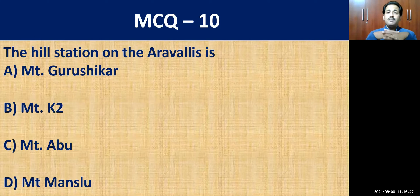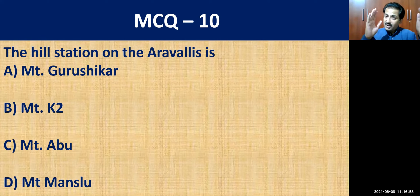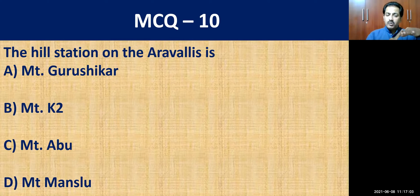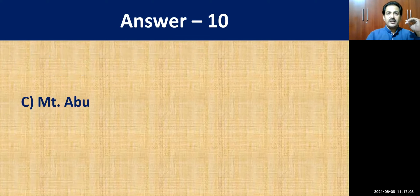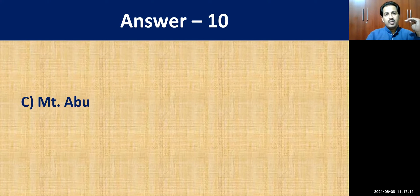MCQ question number ten: the hill station on the Aravallis is? Aravalli is in the northwestern part of India, in Rajasthan. The options are Mount Gurushika, Mount Ketu, Mount Abu, or Mount Manaslu. The correct answer is Mount Abu.